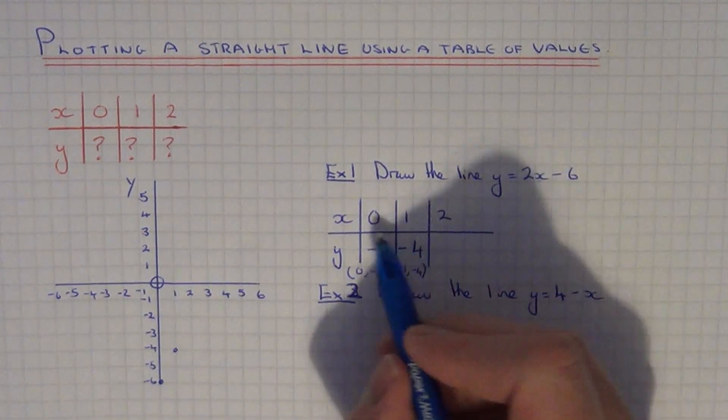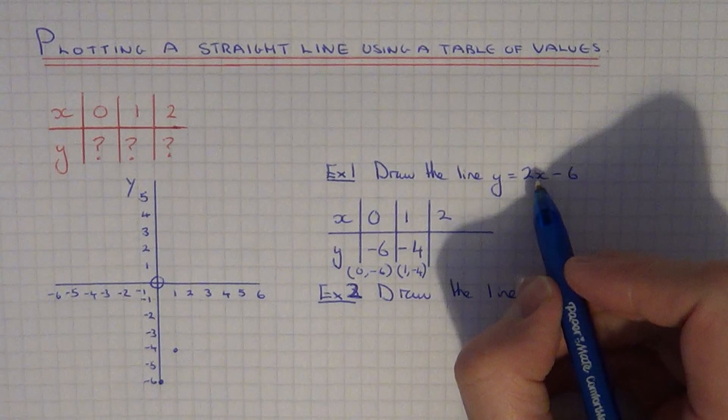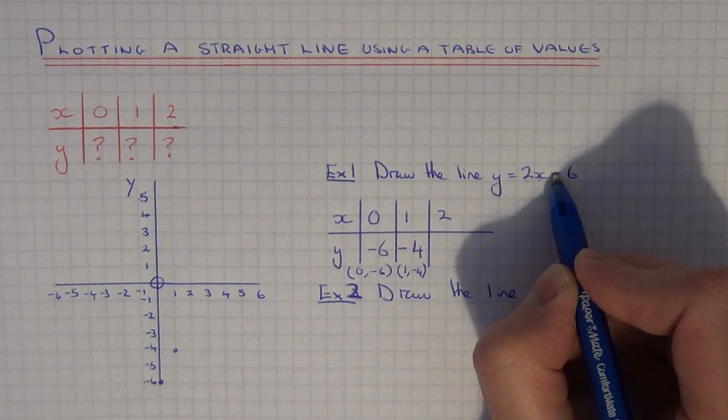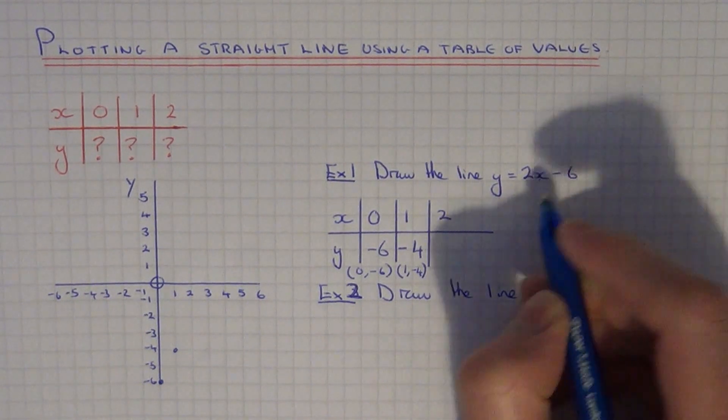And the final point that we've got to do is x equals 2. So sub it in again. 2 times 2 is 4, take away 6 is minus 2.